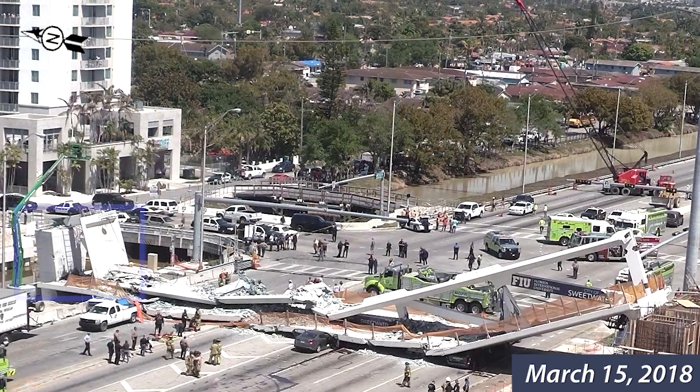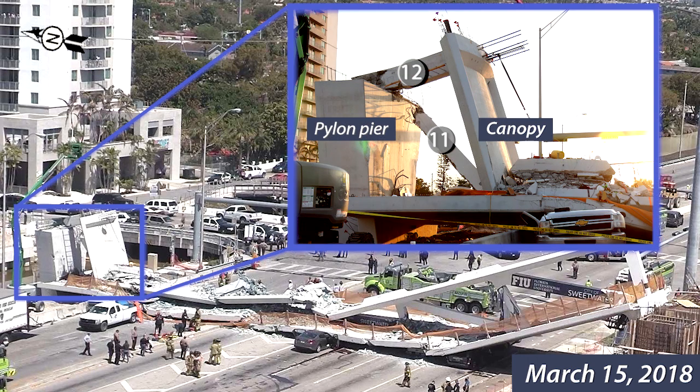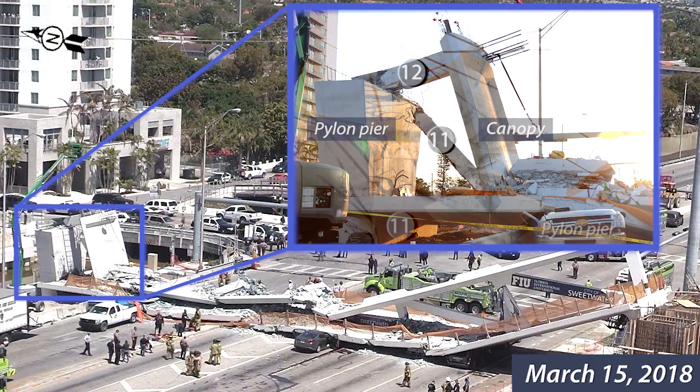The collapse began at the north end of the bridge, initiating at the cold joint between the deck and truss members 11 and 12. Large shear forces and insufficient reinforcement across the cold joint at this location led to the steadily growing cracks and structural failure.